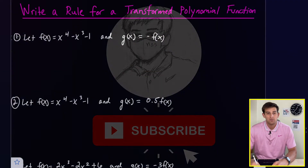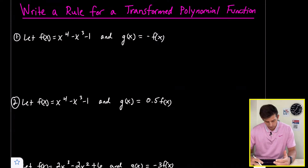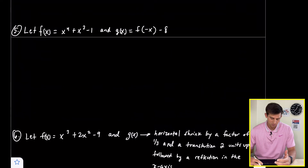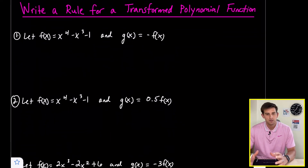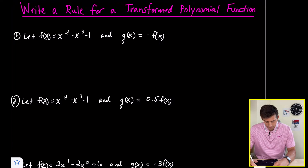In this video we're going to talk about how we can write some rules for polynomial functions that have been transformed. We're going to go through six examples today that involve various types of transformations and write what the new equation or function would look like, and also tell what transformations have taken place. For number one, let f of x equal x to the fourth minus x cubed minus one, and g of x equal the opposite of f of x.